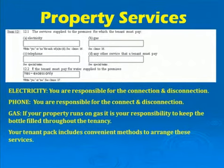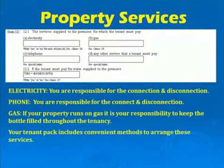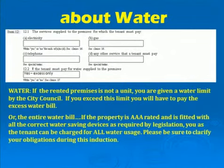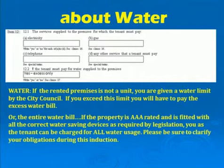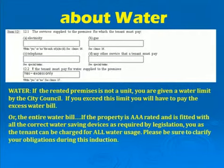The property services section covers electricity, phone, and gas. You are responsible for the connection and disconnection of electricity and phone. If there is gas at your property, you'll be required to keep the bottle filled throughout the tenancy, including filling it before you vacate. Regarding water: if the rented premises is not a unit, you are given a water limit by the City Council and if you exceed this limit you'll have to pay excess water charges. If the property is triple-A rated and fitted with all correct water-saving devices, you as a tenant can be charged for all water usage. Please clarify this point before signing the lease.